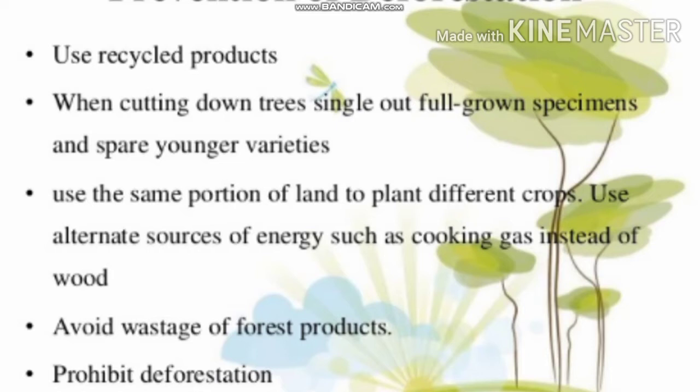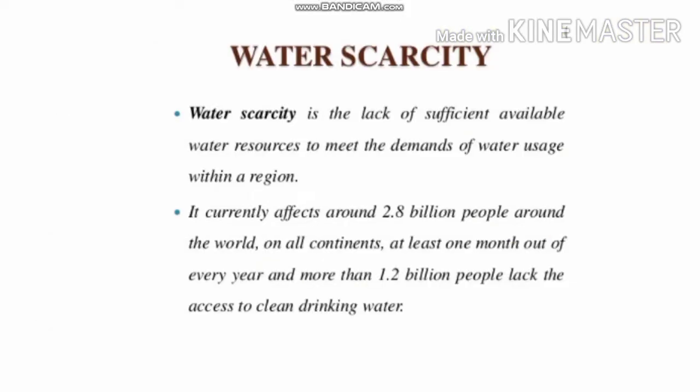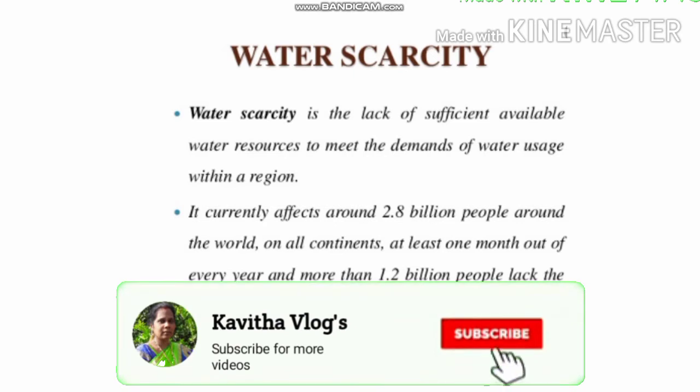Solutions for deforestation: use recycled products when cutting down trees; single out fully grown specimens and spare younger varieties for future generations. Use the same portion of land to plant different types of crops. Use alternative sources of energy such as cooking gas instead of wood. Avoid wastage of forest products and prohibit deforestation.